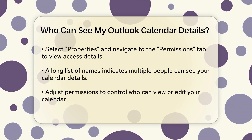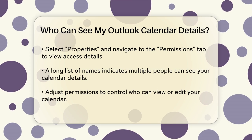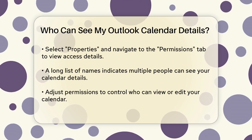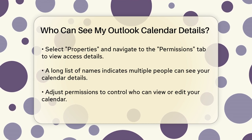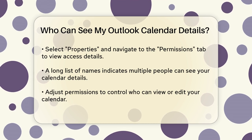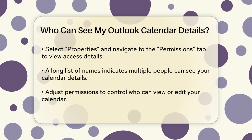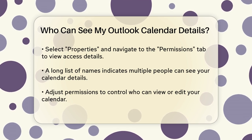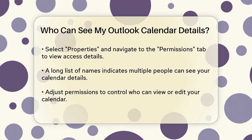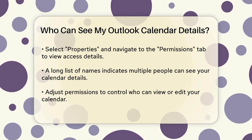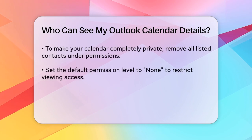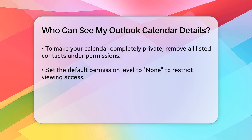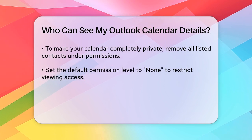If you see a lot of names, it means those people can see your calendar details. You can control this by adjusting the permissions. For example, if you want to make your calendar completely private, you need to remove all the contacts listed under Permissions. Simply select each contact and click Remove. You can also set the default permission level to None to ensure no one can view your calendar details unless you specifically add them.